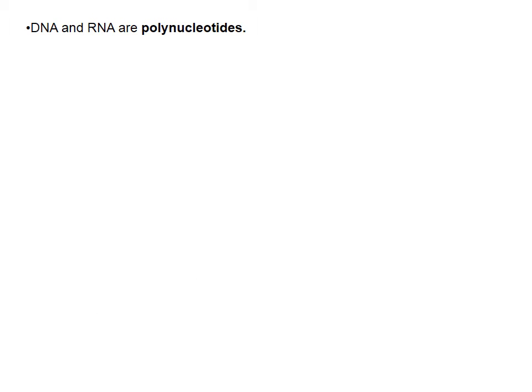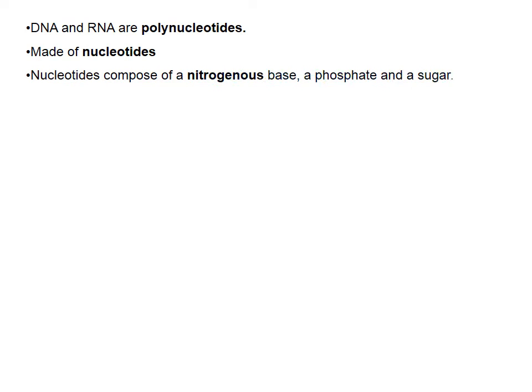So DNA and RNA are polynucleotides, which are polymers, and the monomer of which are nucleotides. You need to know the basic structure of a nucleotide — you don't need to be familiar with the whole chemical structure. It composes of three parts: firstly a nitrogenous base, indicated in green on this diagram — it's called a nitrogenous base, or nitrogen-containing base, because it contains a lot of nitrogen — a phosphate group, and a sugar group.